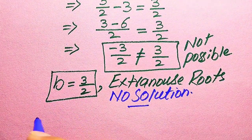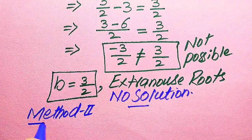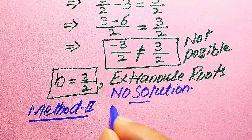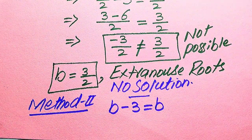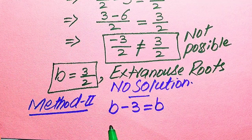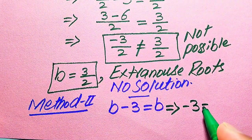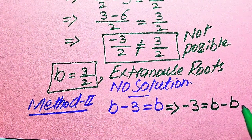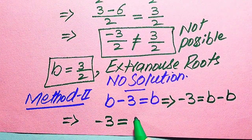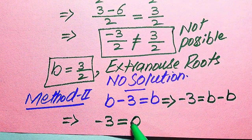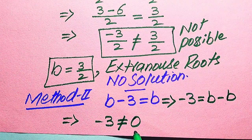Now we solve the problem using Method 2. The given equation is √(b − 3) = b. In this method we move b to the right-hand side: √(b − 3) − b = 0, giving −3 = b − b, which means −3 = 0. You can clearly see that −3 equals 0 is not possible because −3 is not equal to 0.